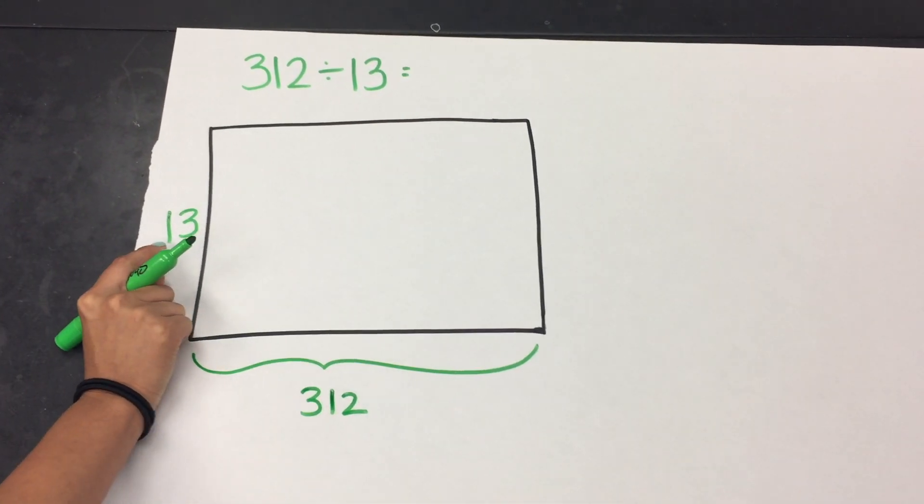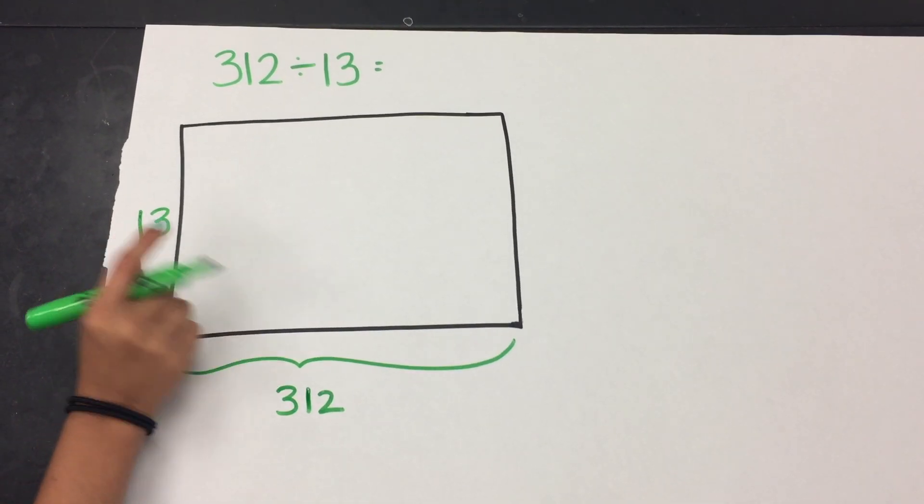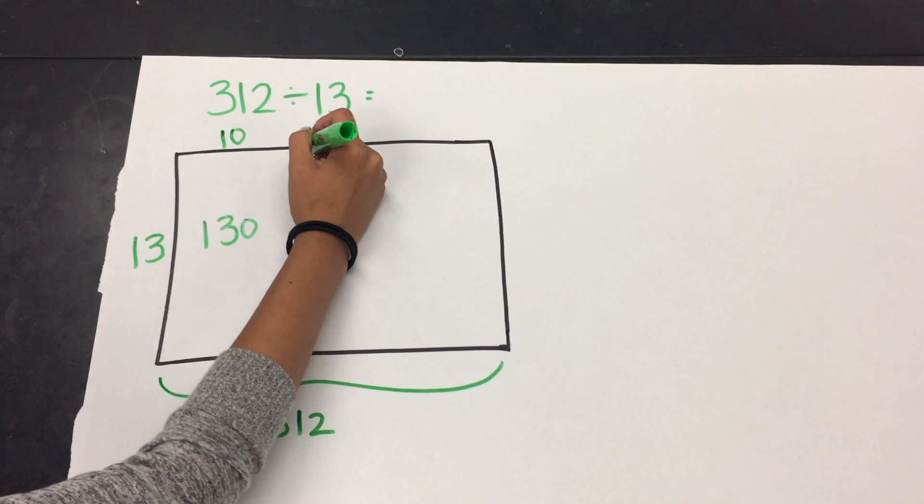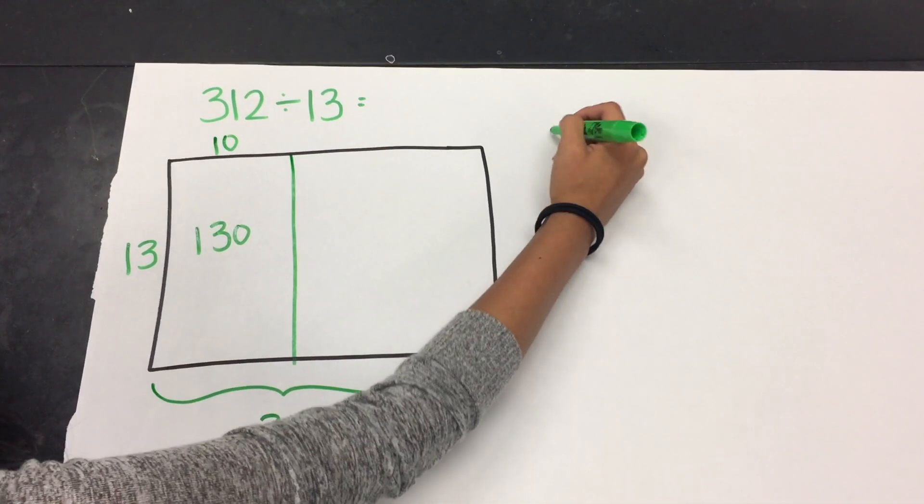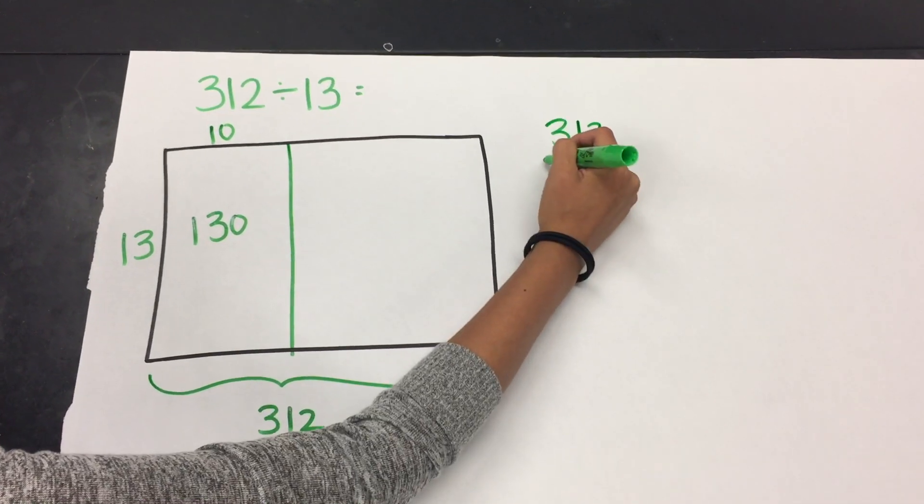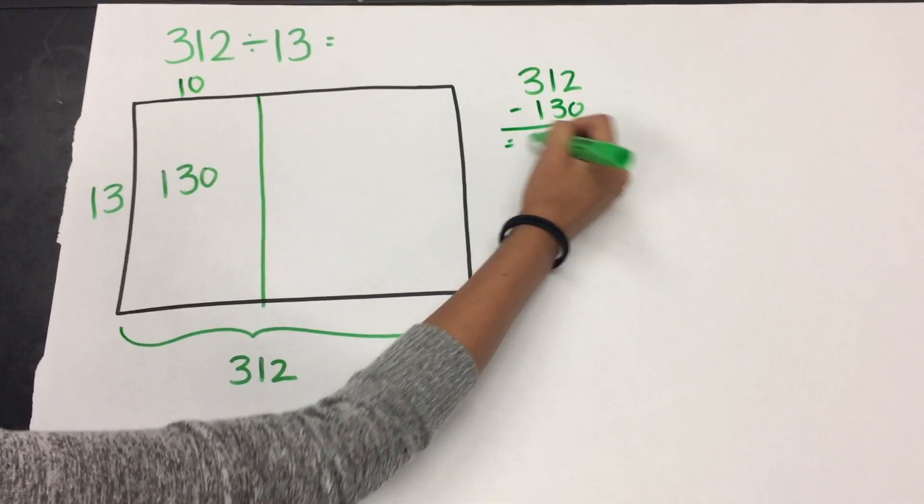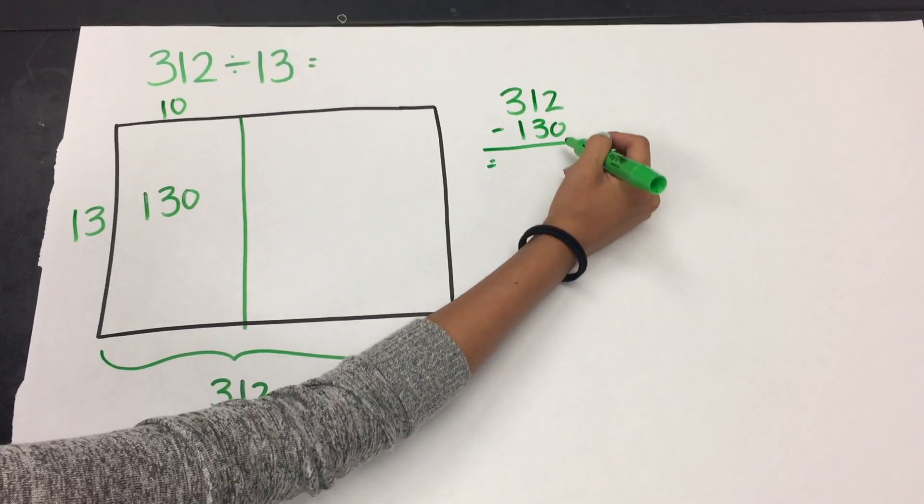So when I start to think about the number 13, I instantly know that 13 times 10 equals 130. So then I'm going to start to keep track of my subtraction because I know that my total in my area model needs to equal 312.